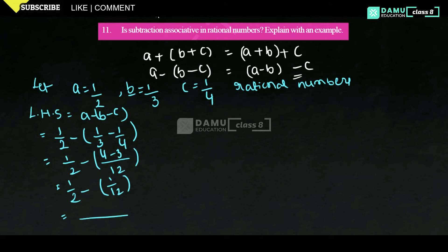The least common multiple of 2 and 12 is 12. So 6 times 2 is 12, giving us 6/12 minus 1/12, that is 5/12. So LHS equals 5/12.